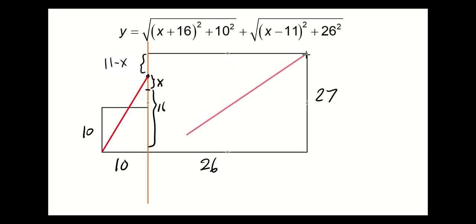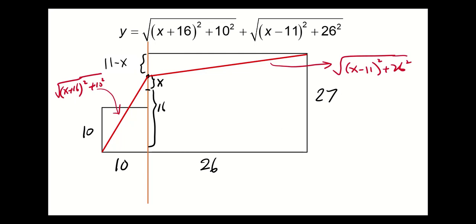After that, we join the two points as shown so that we will get a segment of length √((x+16)² + 10²) and another segment of length √((x-11)² + 26²).